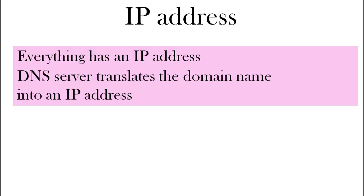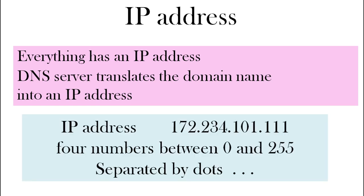Everything has an IP address, and this is how we know where to send different web pages and web documents. A DNS server translates the domain name into an IP address for you. An IP address is a series of four numbers between 0 and 255, separated by dots — here's an example of an IP address.